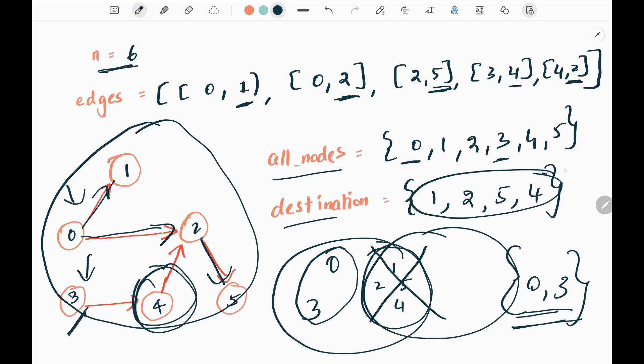The intuition behind this particular approach is that we are taking the destination set. The destination set represents that I can reach these nodes from a node, so we are avoiding these nodes from the all_nodes set.